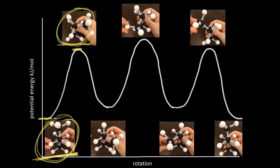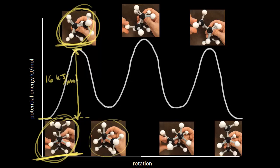The energy difference between these two conformations turns out to be approximately 16 kilojoules per mole. So it takes energy to go from this staggered conformation to this eclipsed conformation. From the eclipsed conformation, we rotated 60 degrees and got this staggered conformation. Notice this staggered conformation is a little higher in energy than our first staggered conformation — the energy difference between our two staggered conformations is approximately 3.8 kilojoules per mole.